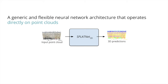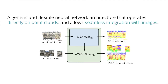In this work, we propose a generic and flexible neural network architecture that operates directly on point clouds and alleviates the aforementioned issues. Our architecture also allows seamless integration with 2D data when the input point cloud comes with some associated images.